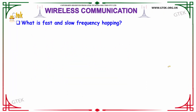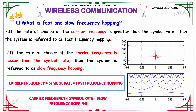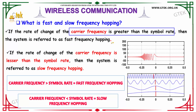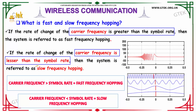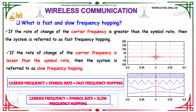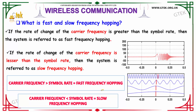What is meant by fast and slow frequency hopping? If the rate of change of the carrier frequency is greater than the symbol rate, the system is referred to as fast frequency hopping. If the rate of change of the carrier frequency is lesser than the symbol rate, the system is referred to as slow frequency hopping. These two relations define fast and slow frequency hopping.